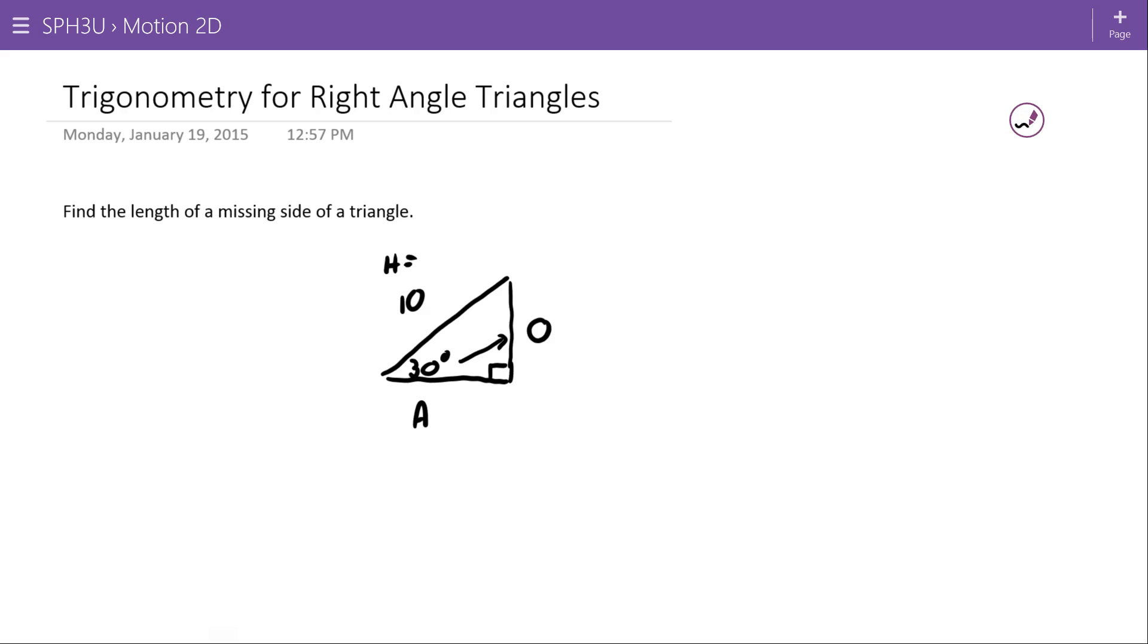So if I want to identify what the O is or what the opposite of this triangle is, I'm going to use the sine ratio as it relates my unknown O to my known hypotenuse. I'm putting the numbers in. Sine 30 equals opposite over 10.